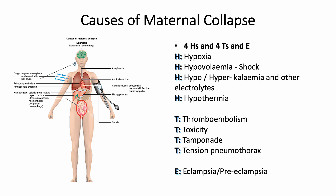The third H is hypo or hyperkalemia, or other electrolyte abnormalities such as magnesium, calcium, sodium, or glucose. The fourth H is hypothermia, so you should be able to check the temperature of your patient.